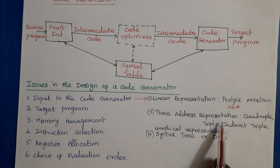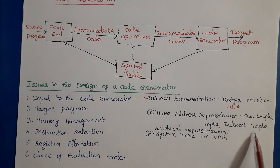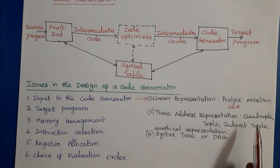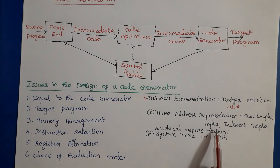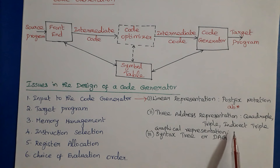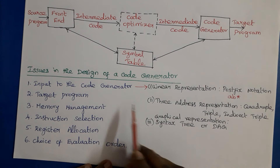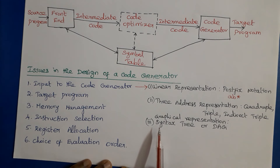The intermediate code may also be a three-address representation such as quadruple, triple, and indirect triple. Quadruple means each record has four fields: operator, argument one, argument two, and result. Triple structure has only three fields: operator, argument one, and argument two. Indirect triple means it has a pointer to the triple structure. We have already seen all about these.